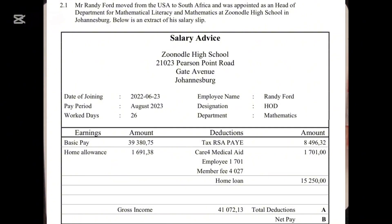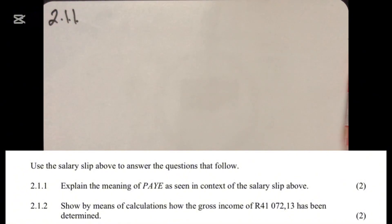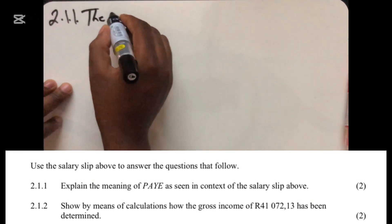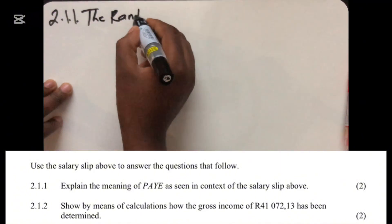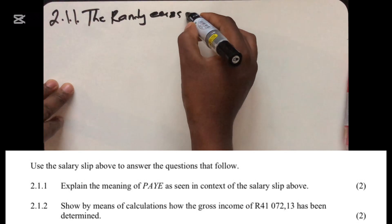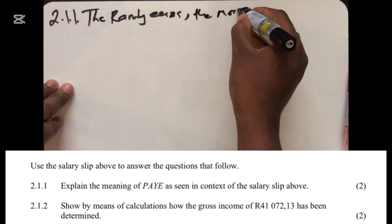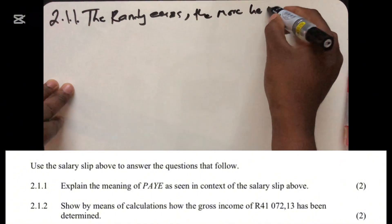Let's look at the first question. It says: explain the meaning of pay as you earn as seen in the context of the salary slip above. Using the context on this pay slip — the more Randy earns, the more he will pay tax.